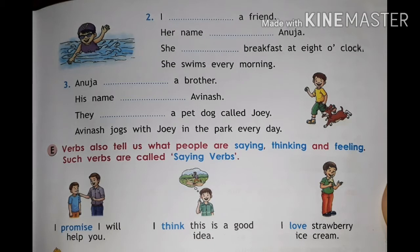Now we see the third one, number three. Anuja has a brother. His name is Avinas. They have a pet dog called Joy. Avinas plays with Joy in the park every day. So in this way we fill the blanks using be verbs and has and have.